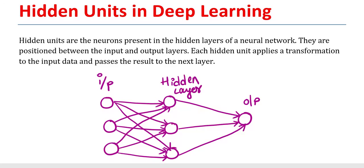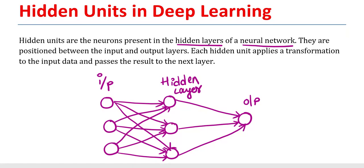Hello friends, welcome to my channel. Today we will discuss about hidden units. This topic belongs to deep learning. Hidden units are the neurons present in the hidden layer of the neural network. They are positioned between input and output layers. Each hidden unit applies a transformation to the input data and passes the result to the next layer. Hidden units are neurons present at the hidden layers — very important terminology.